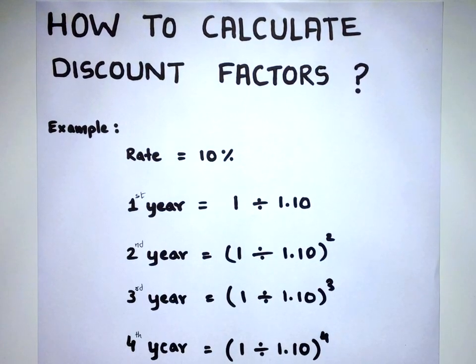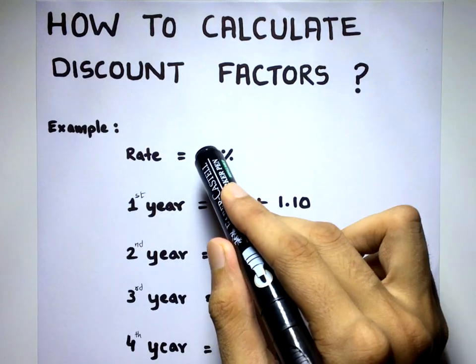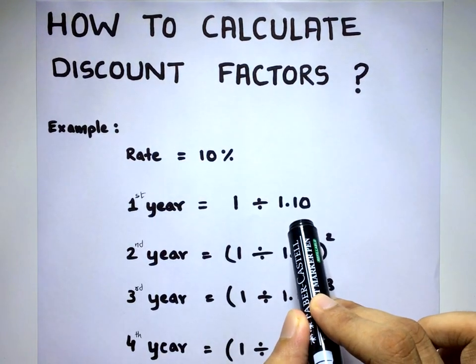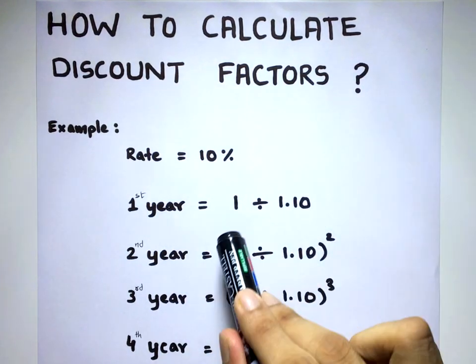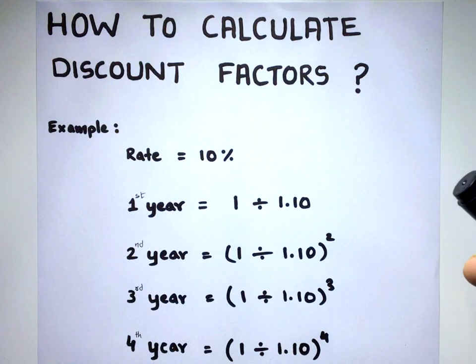So the formula is really simple. What are you going to do? 10%, right? So you are going to take 1 divided by 1.10. If it was 7%, 1 divided by 1.07. If it was 6%, 1 divided by 1.06.